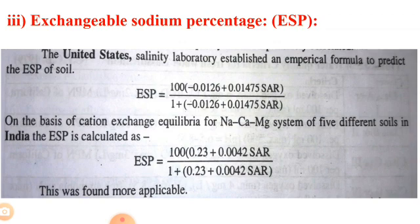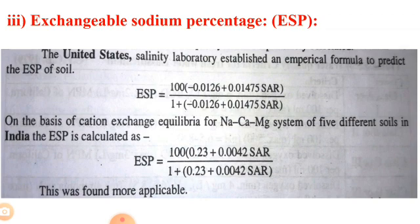On the basis of cation exchange equilibrium for sodium-calcium-magnesium systems of five different soils in India, the ESP is calculated using a second formula: ESP = 100 × (0.23 + 0.0042 × SAR) divided by (1 + (0.23 + 0.0042 × SAR)). This formula was found more applicable for Indian soils.